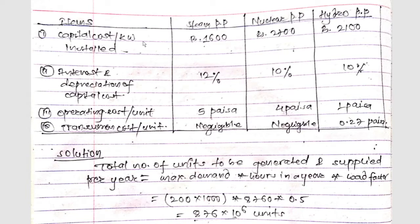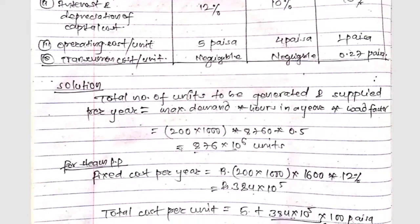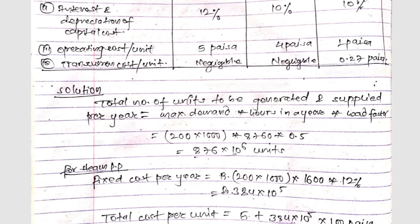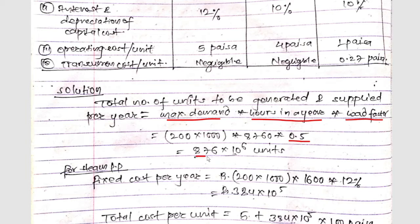The data given includes capital cost per kilowatt installed for steam, nuclear, and hydro power plants, along with interest and depreciation of capital cost and operating cost for each. First, we calculate the total number of units to be generated and supplied per year: maximum demand × hours in a year × load factor = 200 megawatt × 1000 × 8760 × 0.5 = 876×10⁶ units per year.